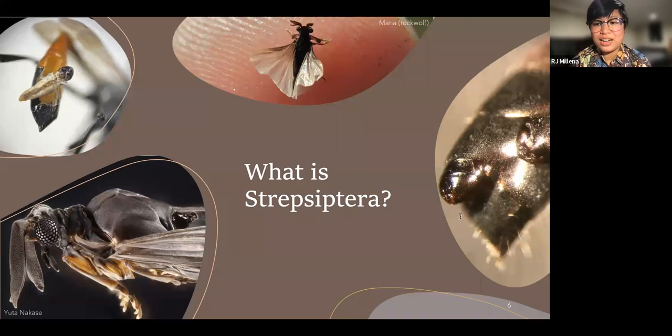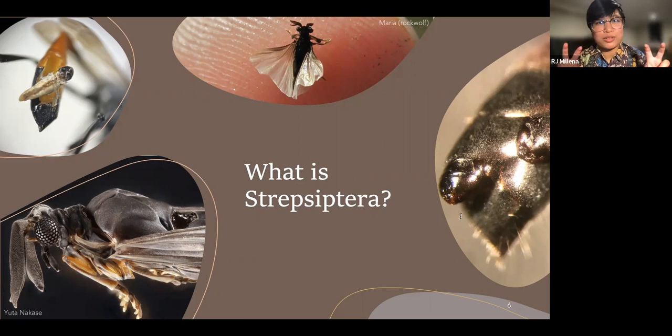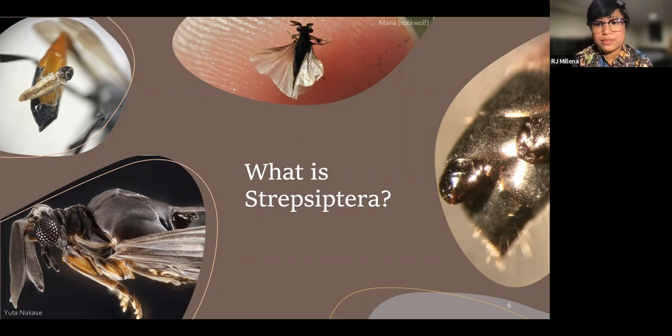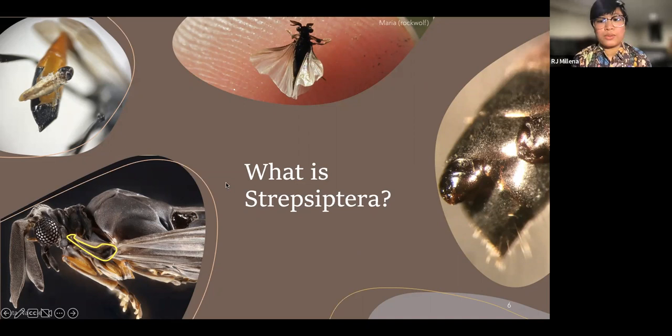Their hosts include cockroaches, flies, true bugs, wasps, bees, ants, mantids, katydids, crickets, and silverfish — which is interesting because silverfish are very basal, very primal insects or hexapods. These parasites are very tiny; that's a fingertip holding a male strepsipteran. They exist for almost all of their lives in the abdomens of their hosts. They're also known as the twisted-wing parasites, named for the club-like structures of the male forewing, which resemble the fly hindwing.